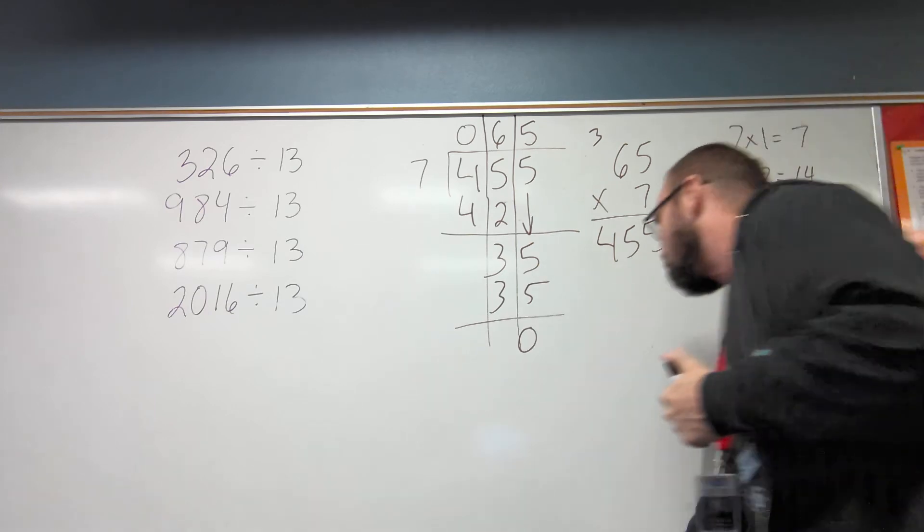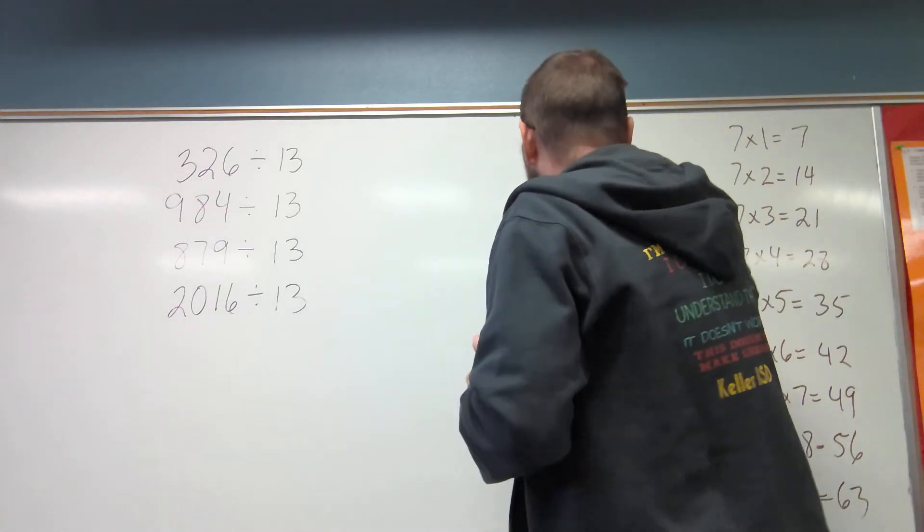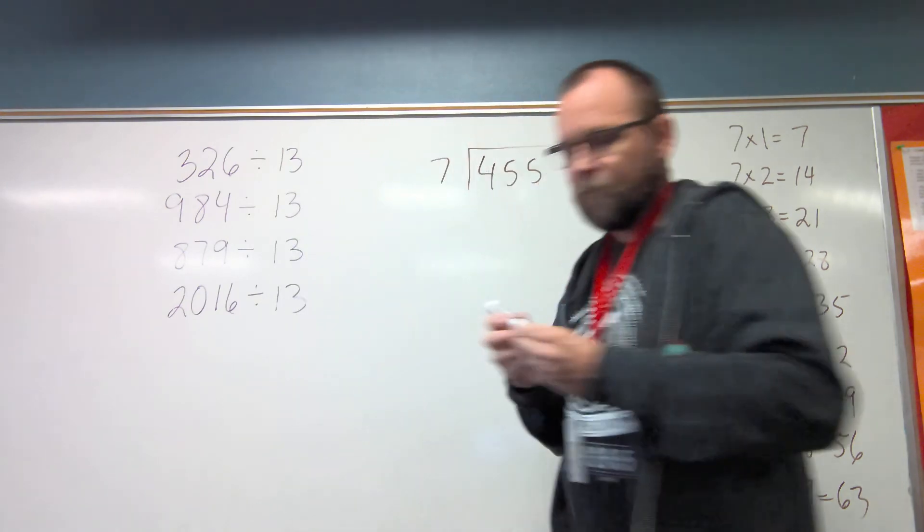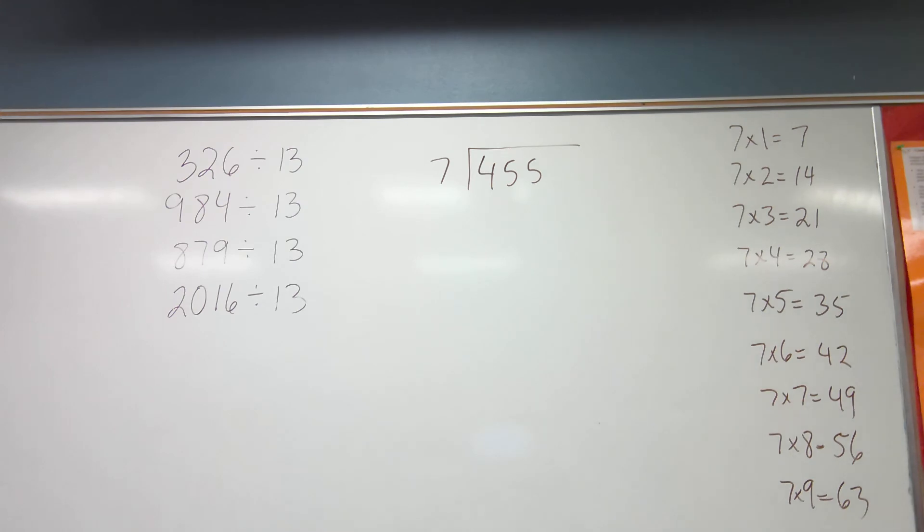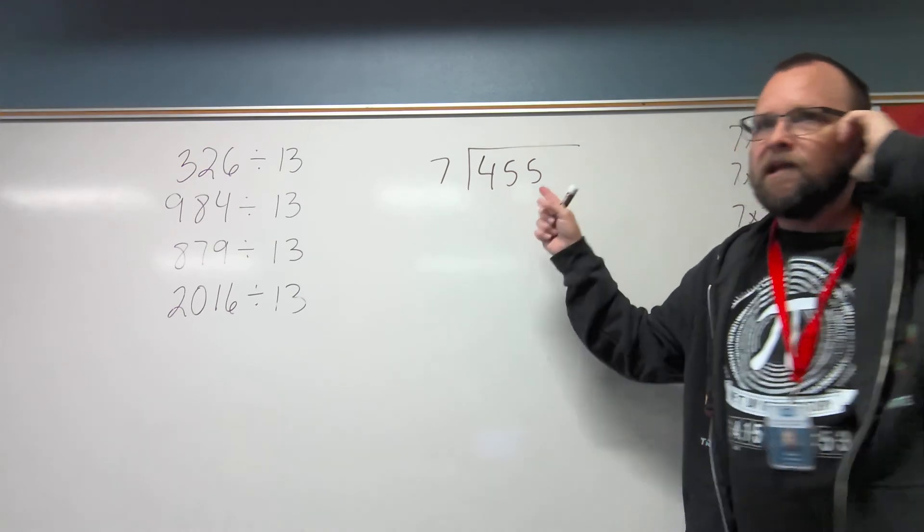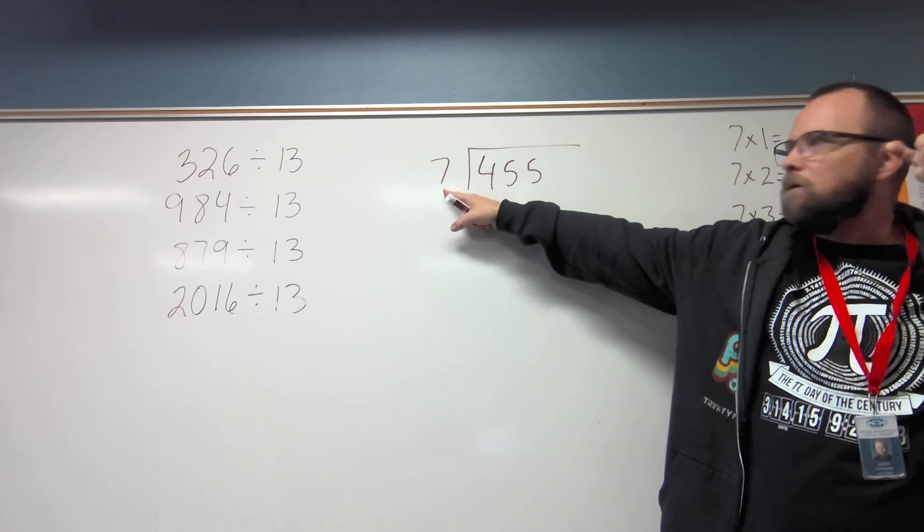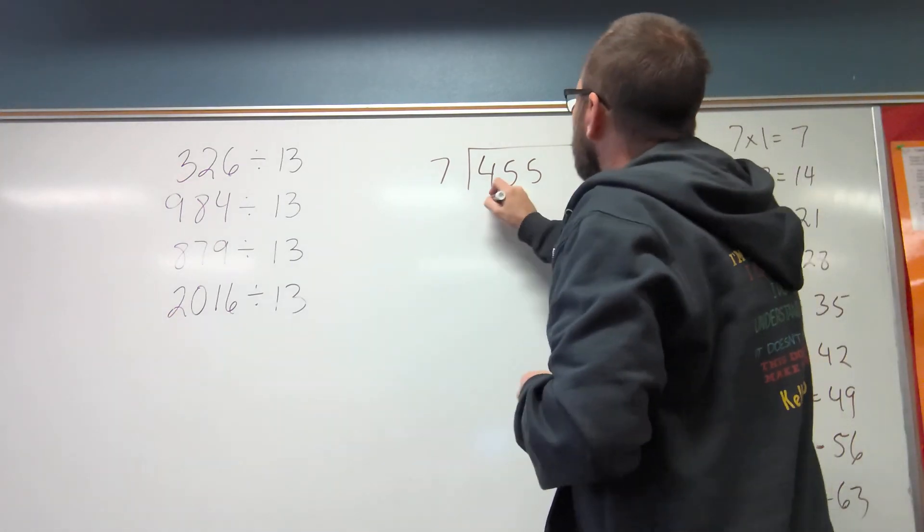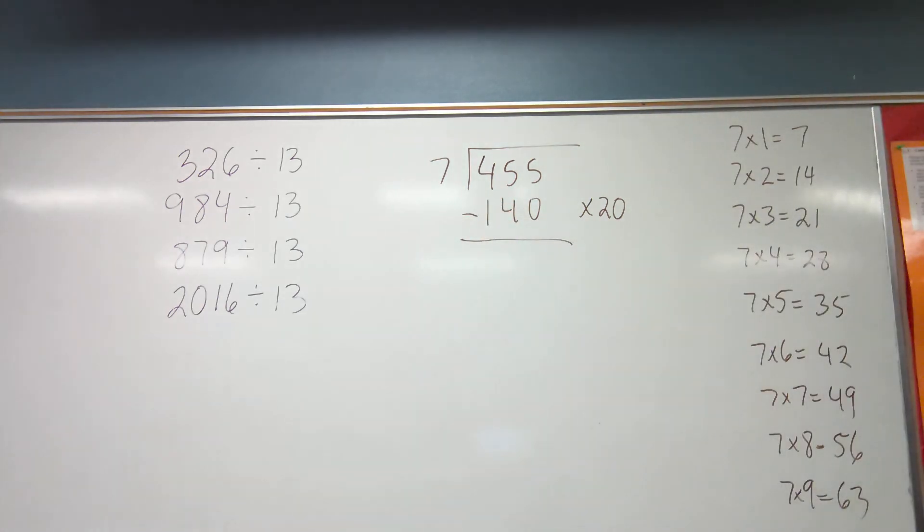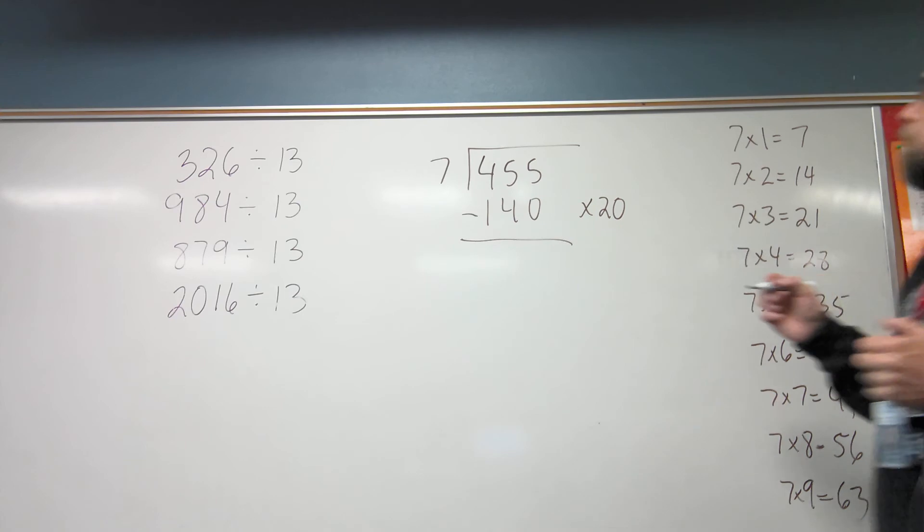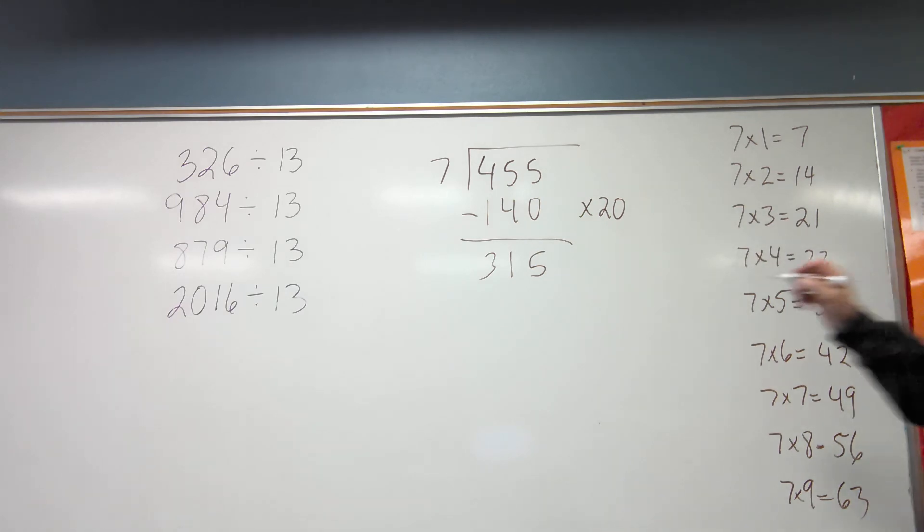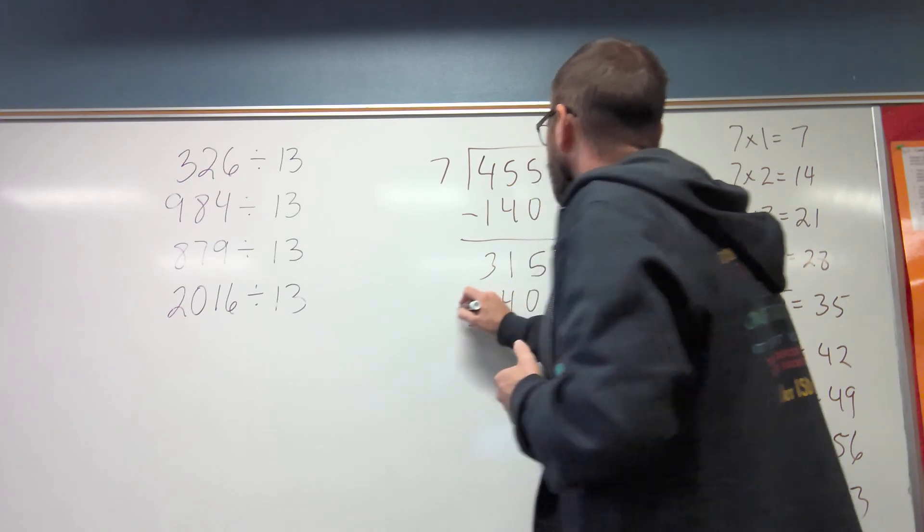Now let's do it partial product-wise. So I have 455 divided by 7. Partial product-wise. I want to be able to do this in my head. So I could go 70. What if I multiplied by 20? What's 7 times 20? 140. So let's do that. So times 20, we said is 140. Wait, can't we times it by 100? I could times it by 100. But 7 times 100 is what? 700. So that's bigger than 455.